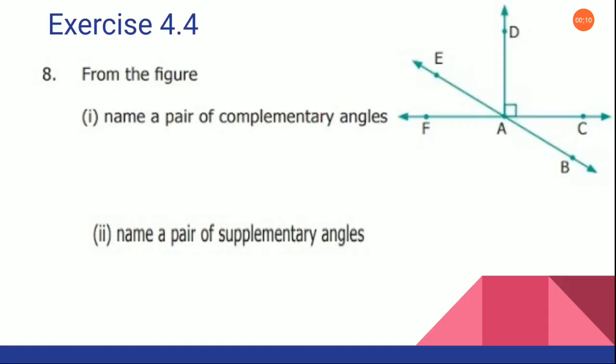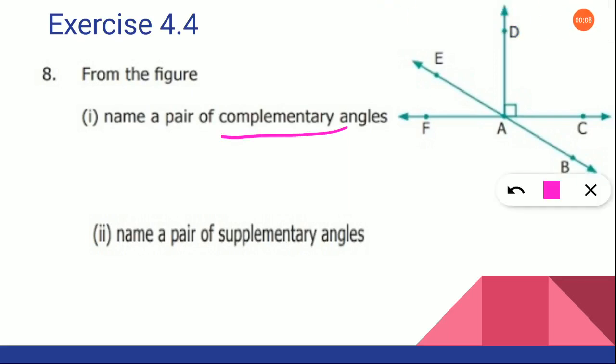Now look at the 8th sum. From the figure, name a pair of complementary angles. You have to look at this picture and name a pair of complementary angles. We already know that complementary means it is 90 degrees. Since they are asking you to name a pair, it should be 2. So when you are adding 2 angles, it should come as 90 degrees.